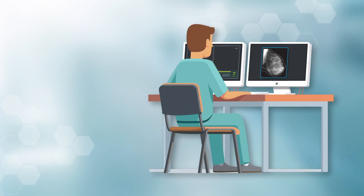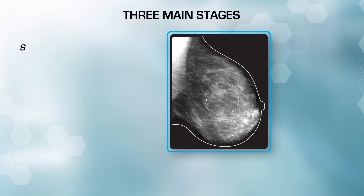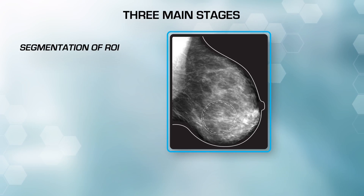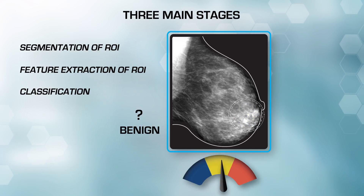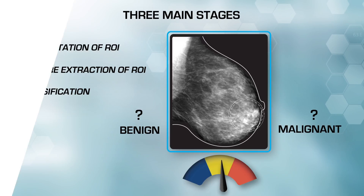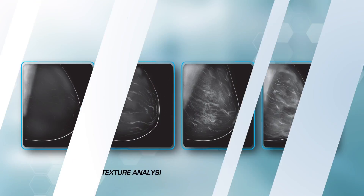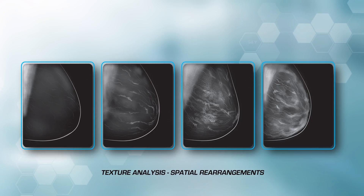A breast cancer CAD system consists of three main stages: segmentation of a region of interest or ROI, feature extraction from the ROI, and classification. Among these, classification of benign and malignant masses poses the toughest problem. Texture analysis has been used to help with classification, as it gives information on the spatial arrangement of the intensities in the ROI.